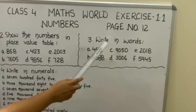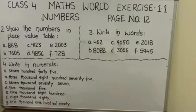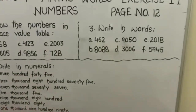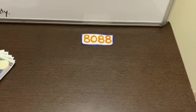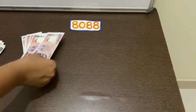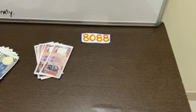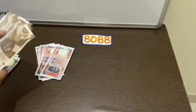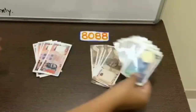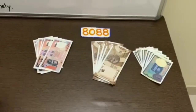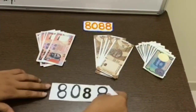Next, question number 3: write in words. We will solve part B. The number is 8,088. Now we will take the currency notes: 8,000. There is no digit at the hundreds place, so no 100 rupee notes. Next, 80 and 8. If we see this figure on one card, it will look like this.